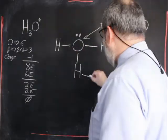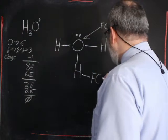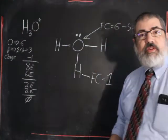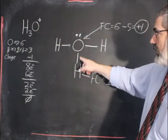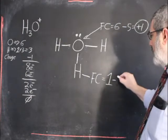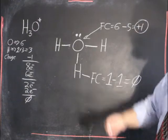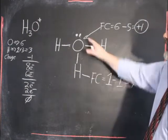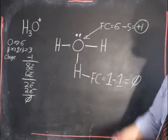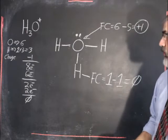Formal charge for hydrogen: hydrogen brings in one valence electron, it's sharing these two. So one minus one is zero. So the formal charges of all the hydrogens are zero. The formal charge of oxygen is plus one. That's why the molecule has a plus one charge.